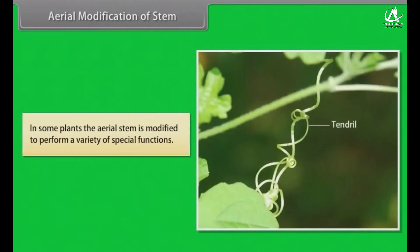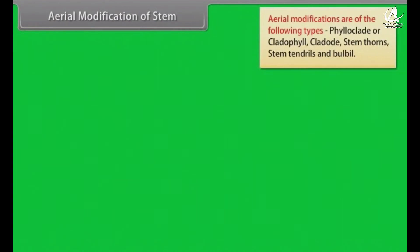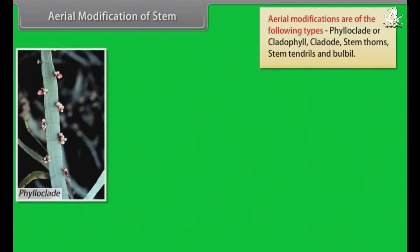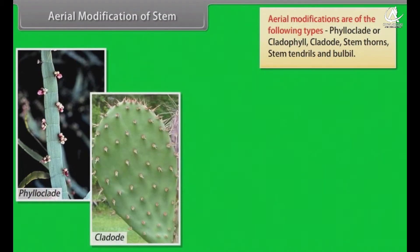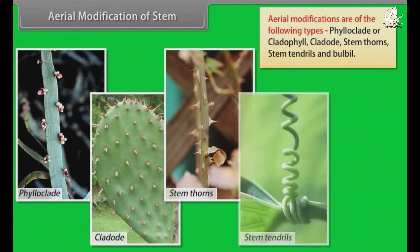In some plants, the aerial stem is modified to perform a variety of special functions. Aerial modifications are of the following types: phylloclade or cladophyll, cladode, stem thorns, stem tendrils, and bulbil.